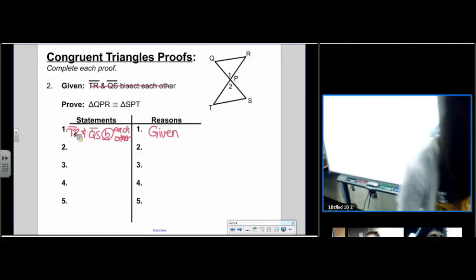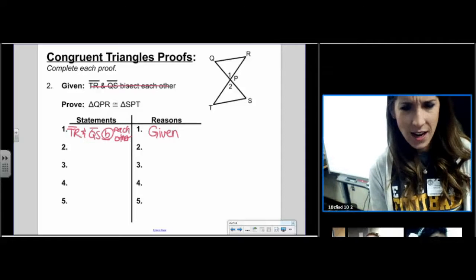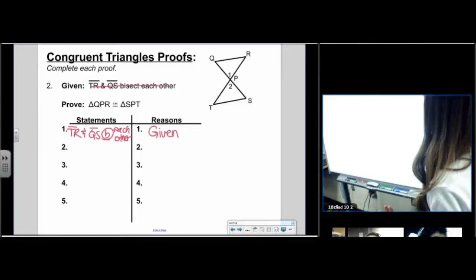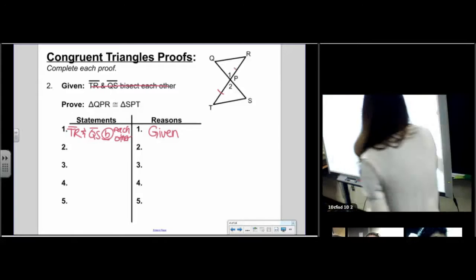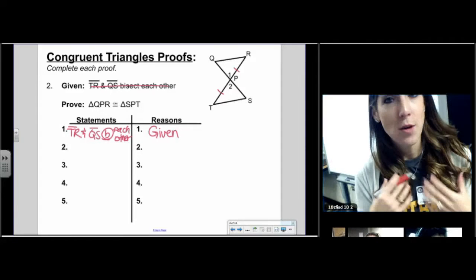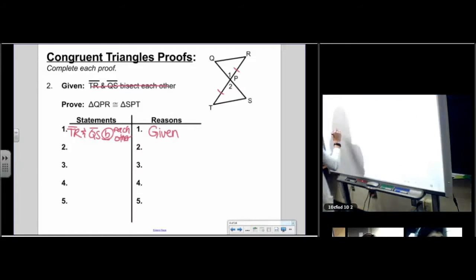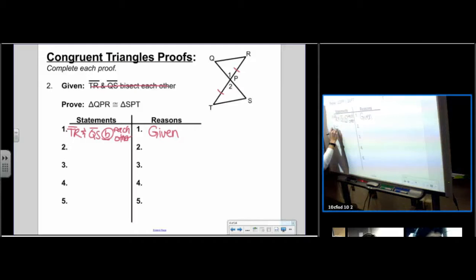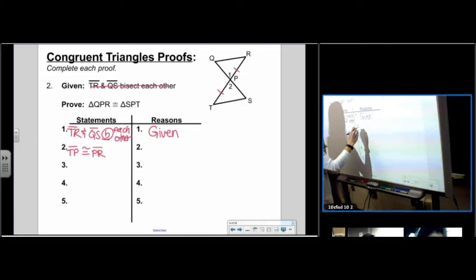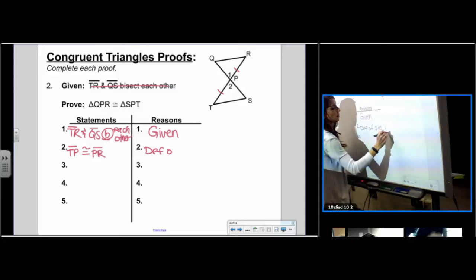You always start with a given and you see if anything can follow from the given. So let's start with a given. TR and QS bisect each other. So that's given. I'm going to cross it off because I've used it. And you literally just write it down word for word. You just write down the given. Next, you see what follows from that statement? What does it mean if a segment has been bisected? Well, if a segment's been bisected, then I have two congruent segments. So you add markings to your picture, but when you add a marking, you have to document it. Segment TP is congruent to segment PR. What's the reason? The reason is definition of segment bisector.